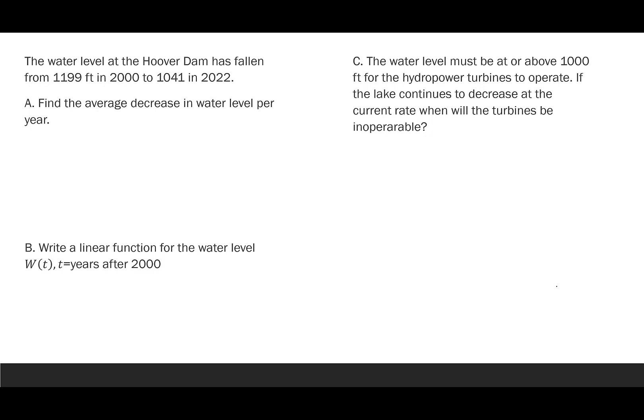The next problem says the water level at the Hoover Dam has fallen from 1,199 feet in the year 2000 to 1,041 feet in the year 2022. So we're going to start by finding the average decrease in water level per year. So very similar to the last problem, we are finding the slope. And so what we're going to do here is we look at where did we end up? So we end up at 1,041. Where did we start? 1,199. And what years went by 2022 minus 2000? So this time we're seeing a decrease. The water level has dropped 158 feet over 22 years. I'm just going to leave that as a fraction because I don't want to estimate it. I'm going to reduce that to negative 79 over 11. When I have fractions like that, I only like to change them into a decimal if it comes out to a finite number of decimal places, and this one does not.